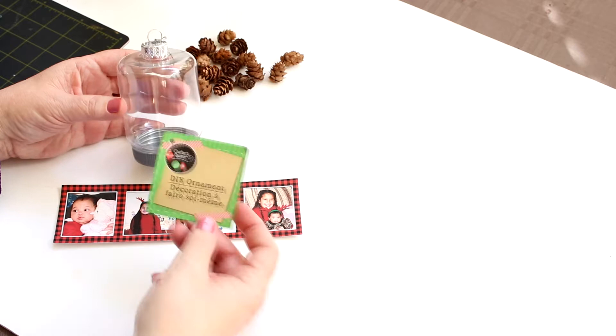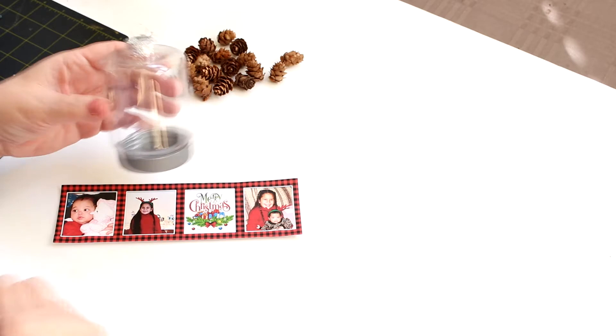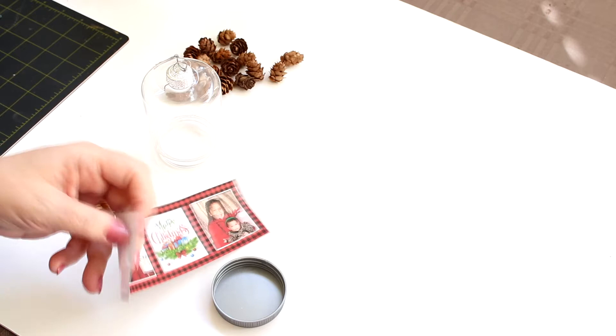So this is the ornament we'll be using today. It's from Crafter Square and I purchased this from the Dollar Tree and I have seen them at different stores online as well and I'll put some links in the description box below. So I'm just going to take the bottom off and then I'm going to put a little bit of tape on the edge of the template.